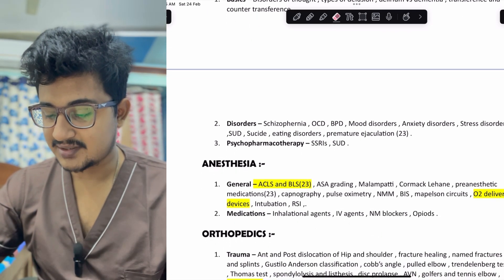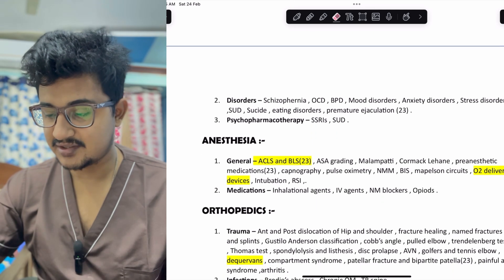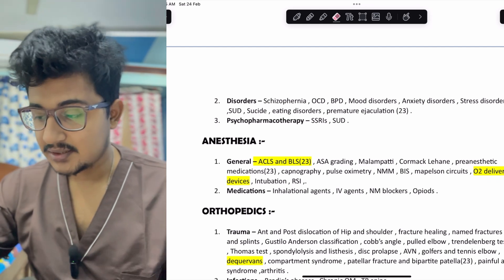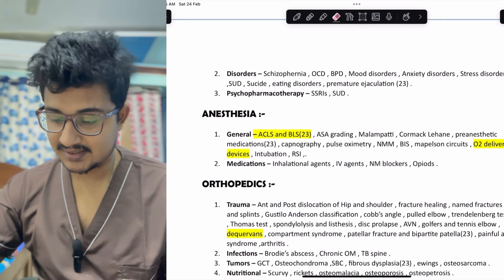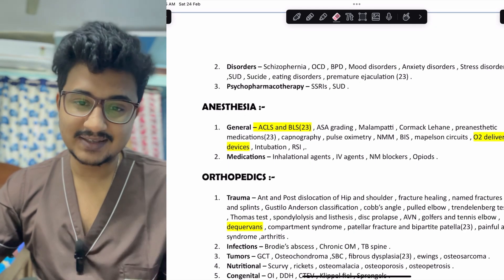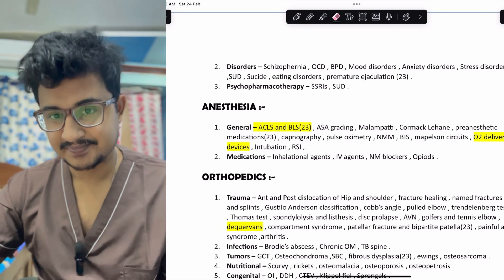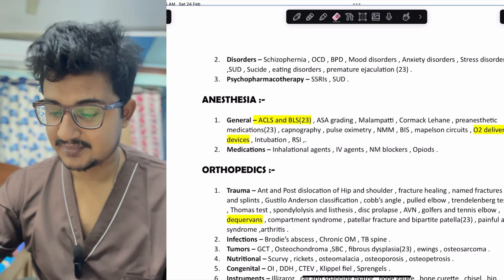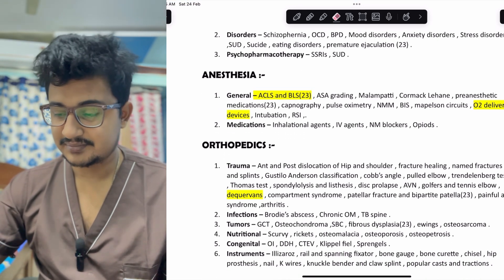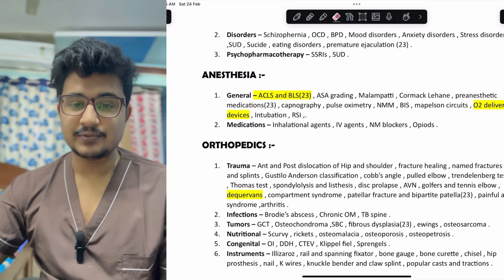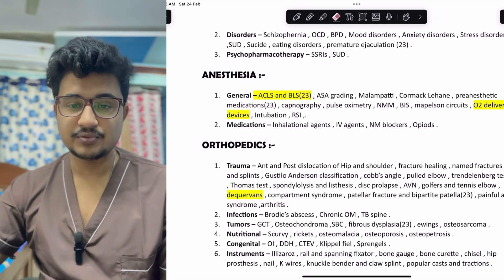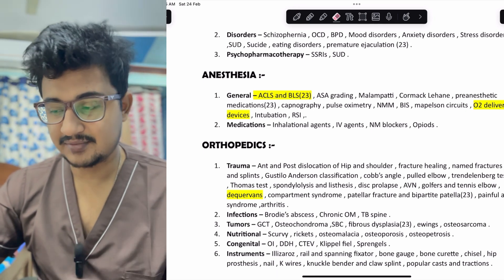Coming to orthopedics. In trauma, named fractures, sports injuries, compartment syndrome, disc prolapse, golfer's elbow and tennis elbow are important. In infection, Brodie's abscess, chronic osteomyelitis, TB spine with paradiscal involvement — most commonly asked — and the middle path regime used in treatment. In tumors, giant cell tumor is very important; also osteochondroma, SBC, fibrodysplasia — asked in NEET 2023 and INISET 2023 as McCune-Albright syndrome — Ewing sarcoma and osteosarcoma.